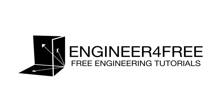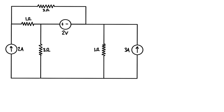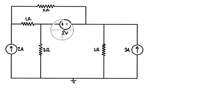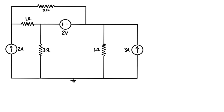Welcome back. We've got another example on supernodes. In this problem we want to find all of the node voltages for the entire circuit. To get started, we draw a ground — it's helpful to place it at the node connecting the most power sources and branches, often connected to a voltage source. In this video, we'll place it at the bottom to isolate the voltage source using the supernode method.